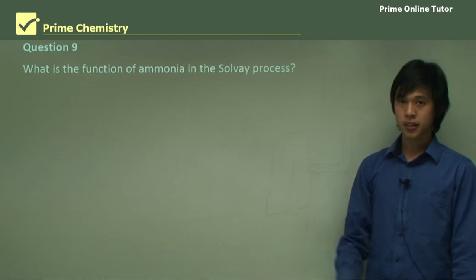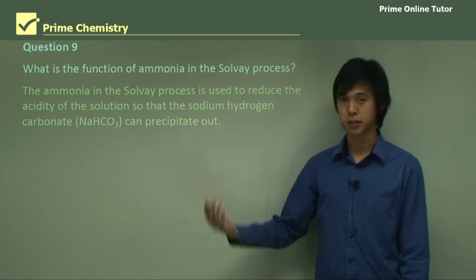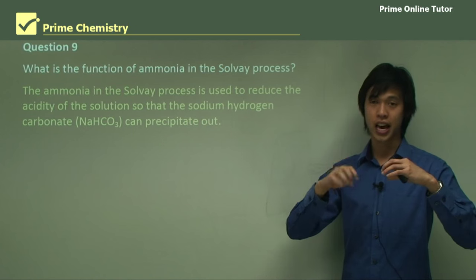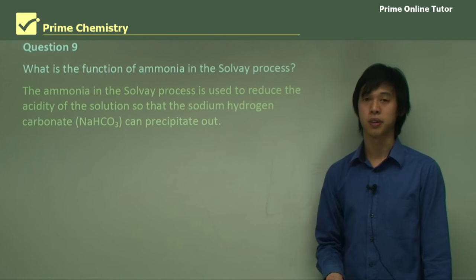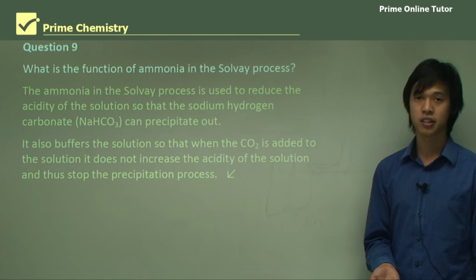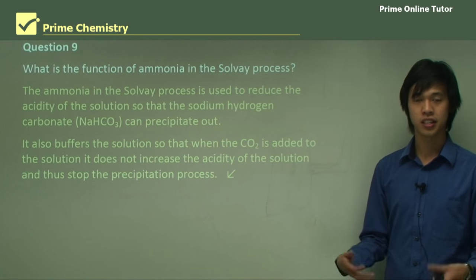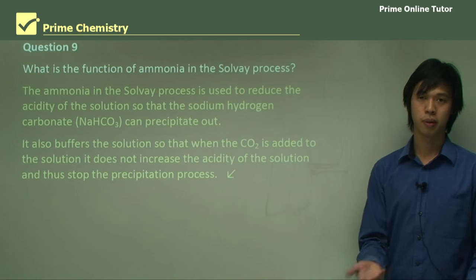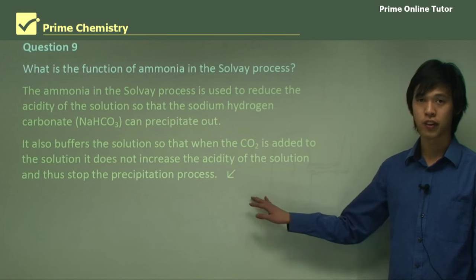What is the function of ammonia in the Solvay process? The ammonia is used to reduce the acidity of the solution so that sodium hydrogen carbonate can precipitate out. We keep the solution alkaline such that the solubility of NaHCO3 is less than that of NaCl, helping it to precipitate. Additionally, it buffers the solution so that when CO2 is added, the acidity doesn't increase — because if acidity goes up, the NaHCO3 dissolves back into solution and can't be collected for heating in process three.